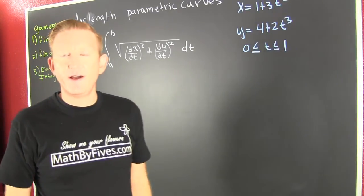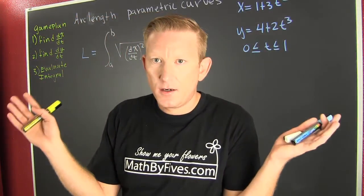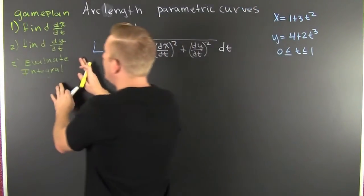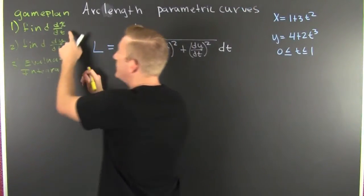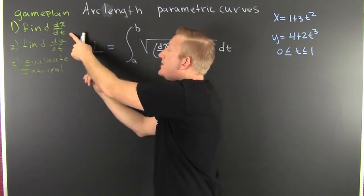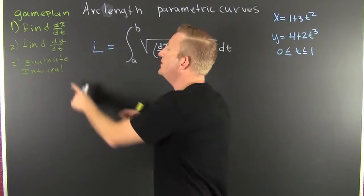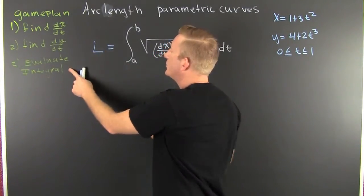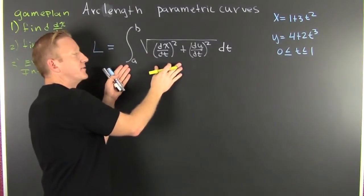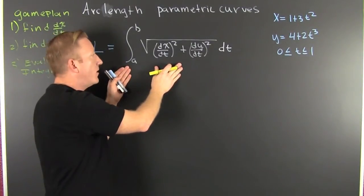The concept of finding the length isn't that hard. We have a game plan. First, we're going to find dx/dt. Then we're going to find dy/dt. Then we're going to evaluate the integral — this integral — which is our arc length formula.